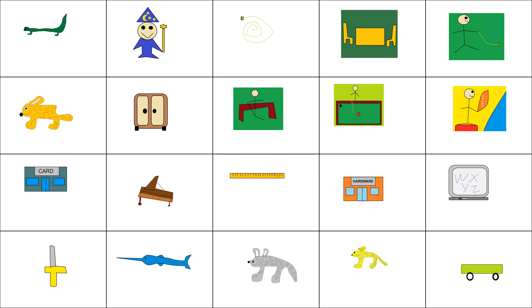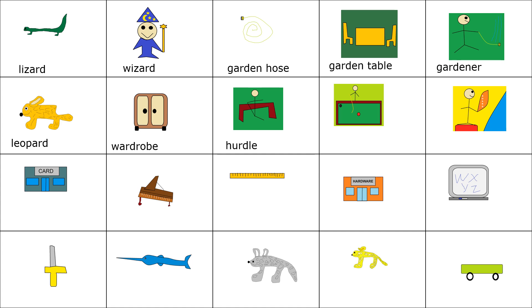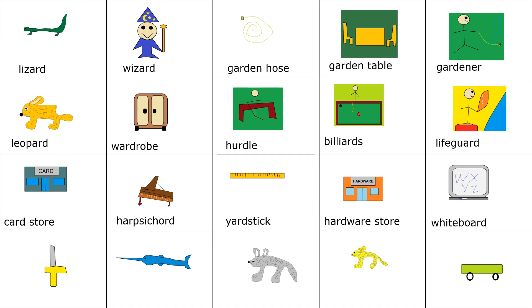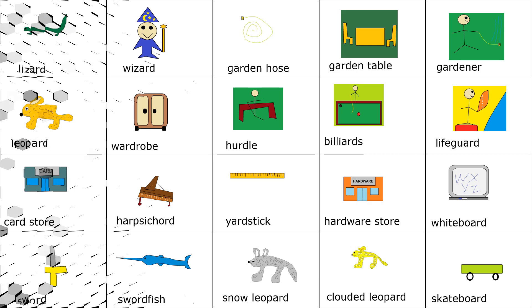RD: Lizard, Wizard, Garden House, Garden Table, Gardener, Leopard, Wardrobe, Hurdle, Billiards, Lifeguard, Card Store, Harpsichord, Yardstick, Hardware Store, Whiteboard, Sword, Swordfish, Snow Leopard, Clouded Leopard, Skateboard.